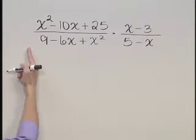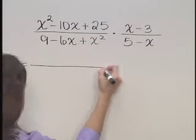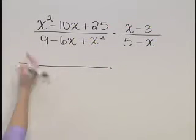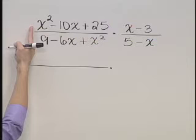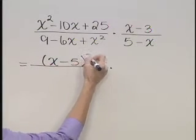First, let's factor the numerator and denominators for each of these quantities. Starting in the numerator, that's a perfect square trinomial. It is going to factor as x minus 5 quantity squared.